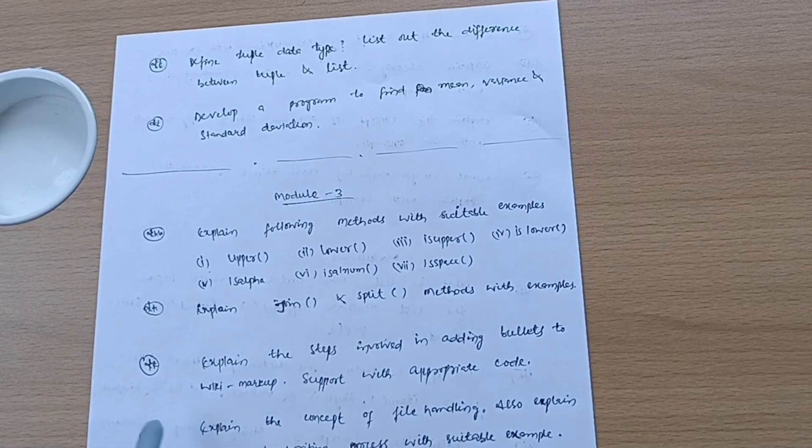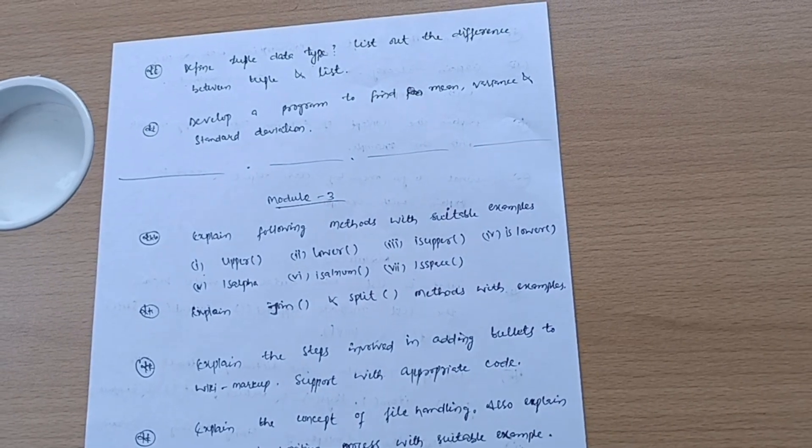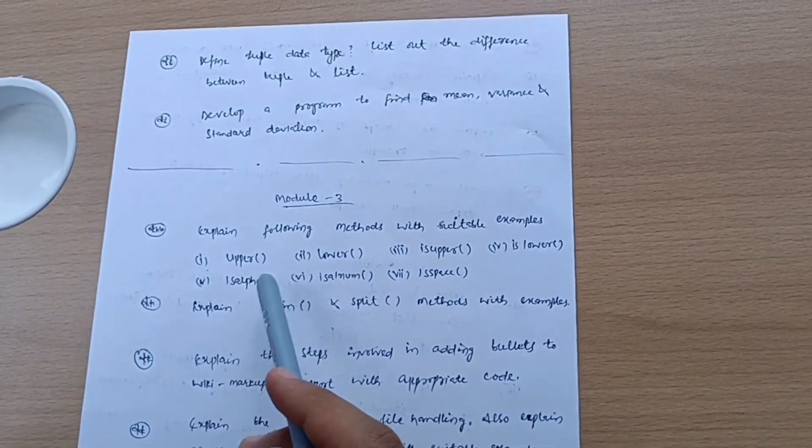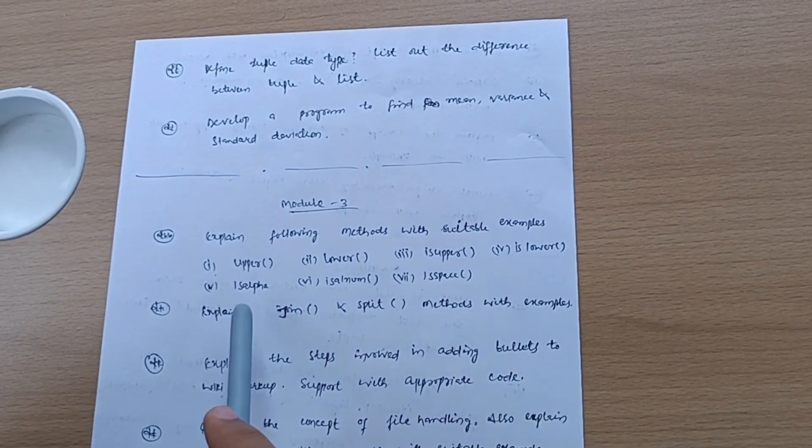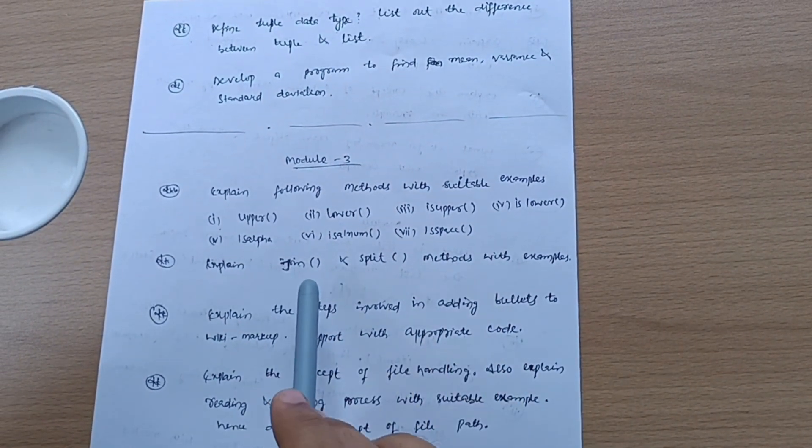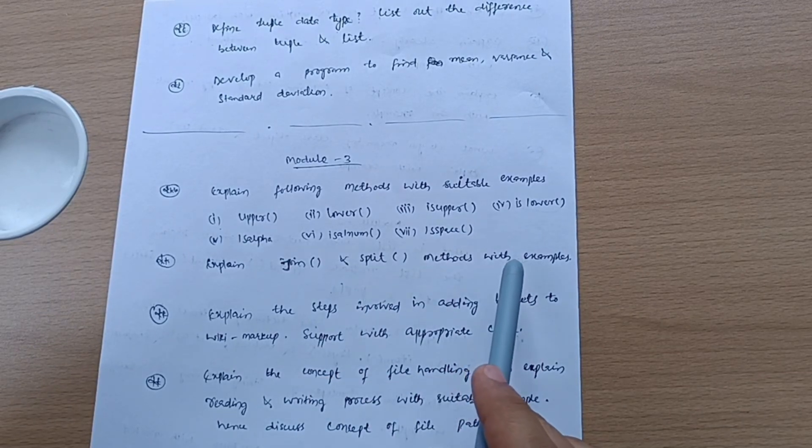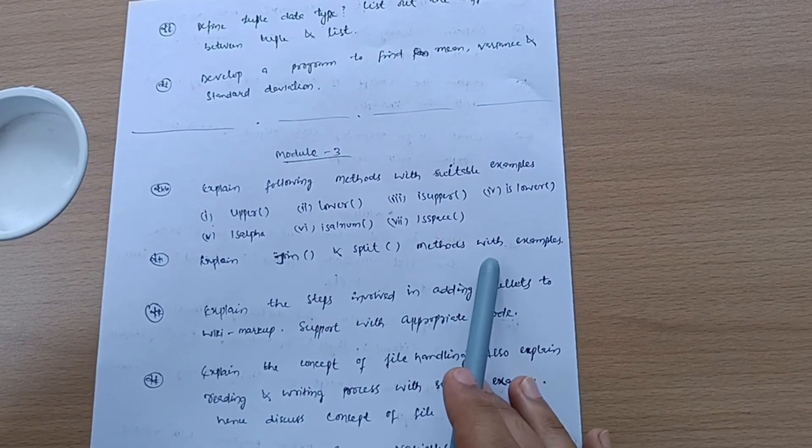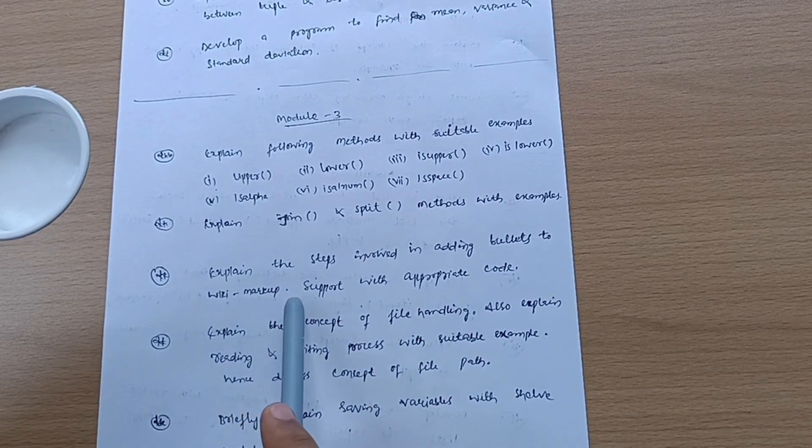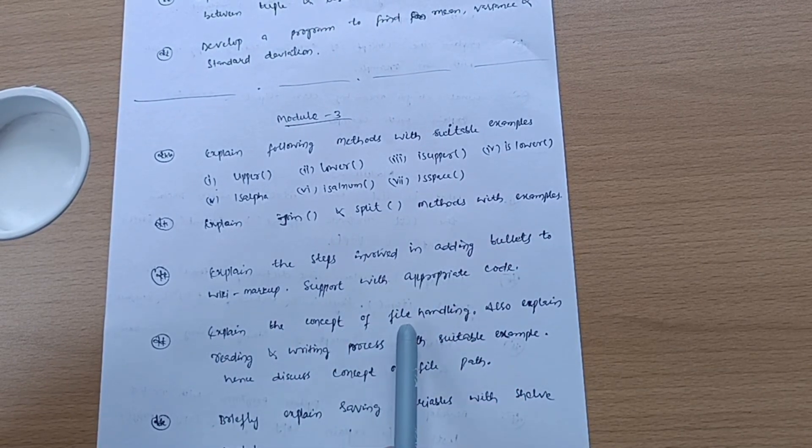If I come to Module 3, there is also vast syllabus, varieties of questions are possible. I have taken the super important ones like: explain following methods with suitable examples - upper, lower, isupper, islower, isalpha, isalnum, isspace. Explain join and split methods with suitable examples. Explain the steps involved in adding bullets to wiki markup, support with appropriate code.